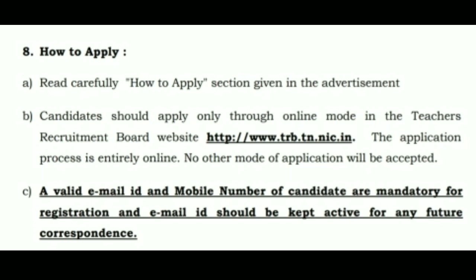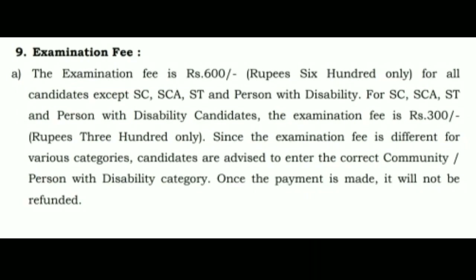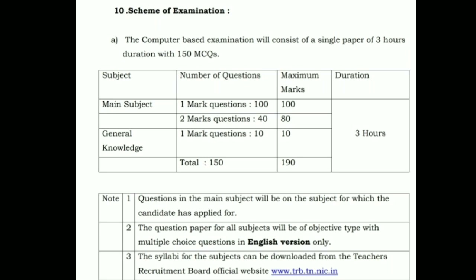The exam fees are 300 for general and 600 for other communities. Very importantly, the question pattern is 150 multiple choice questions, like PGTRB exams. The marks are 190 — the main subject is 100 marks plus 82 marks for two-mark multiple choice questions, and general knowledge is 10 marks, totalling 150 questions for 190 marks. The exam duration is 3 hours.